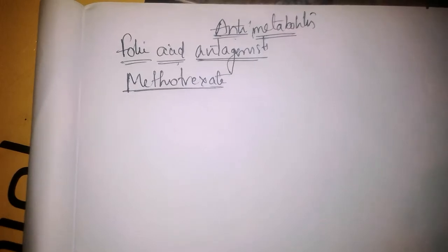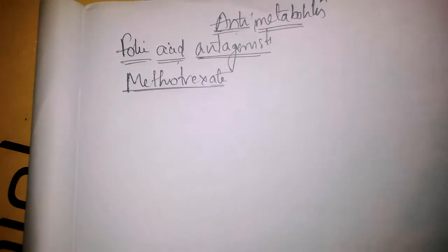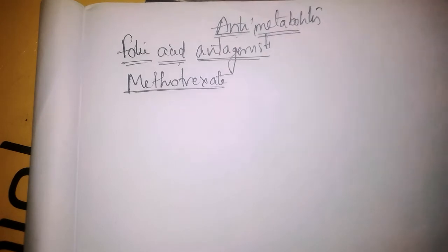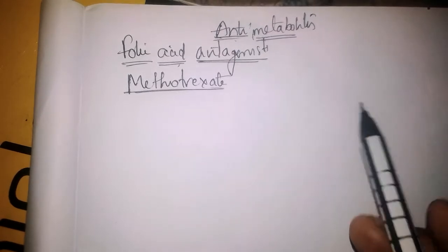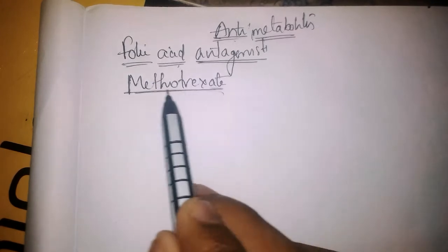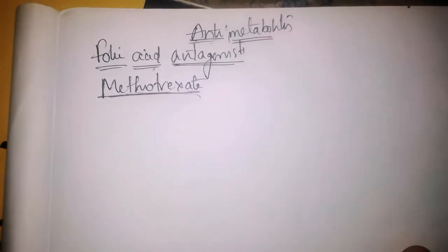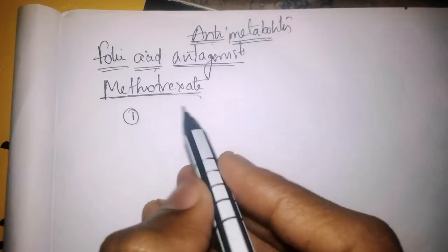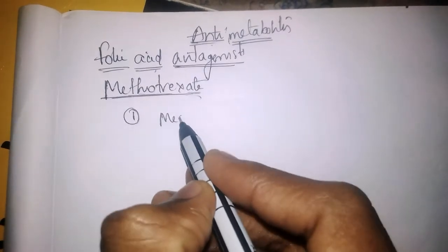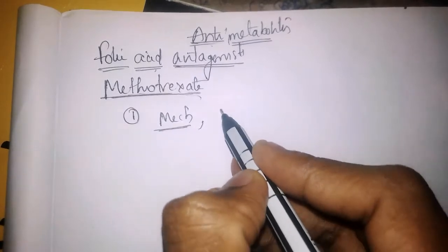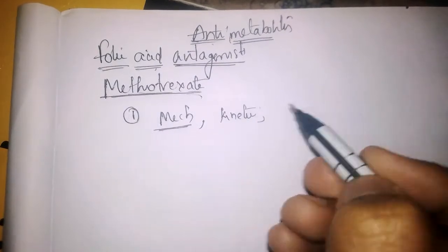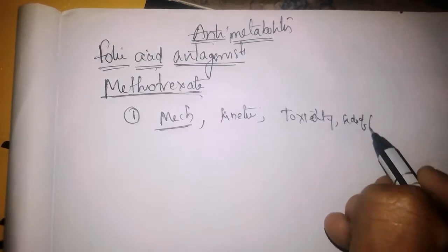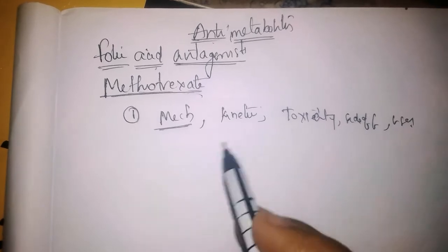Let us discuss folic acid antagonists. This lecture is part of anti-cancer drugs, specifically anti-metabolites. The first anti-metabolite is a folic acid antagonist, and in this category we have methotrexate. In this lecture, we will discuss the mechanism of action, kinetics, toxicity, side effects, and uses of methotrexate.